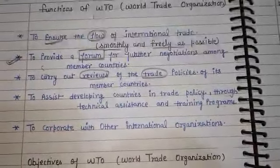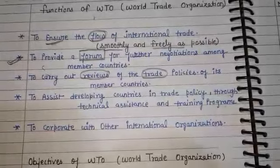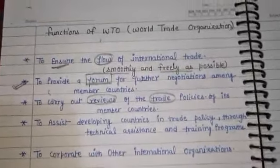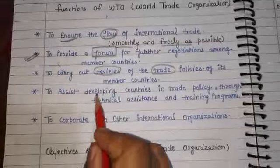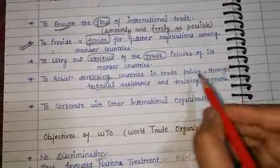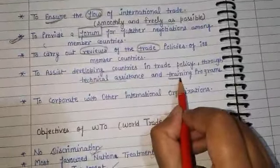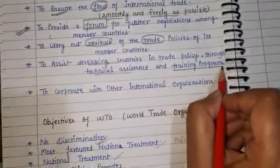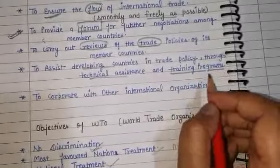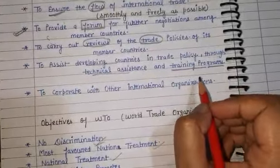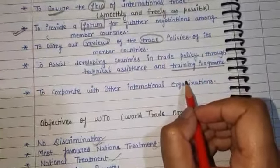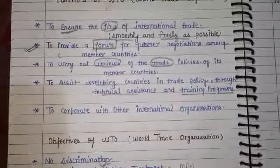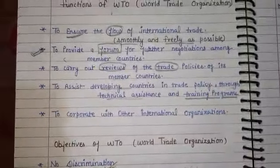Another function of WTO is to assist developing countries in trade policy through technical assistance and training programs. WTO provides technical assistance for developing countries to help them adapt and change their trade policies.